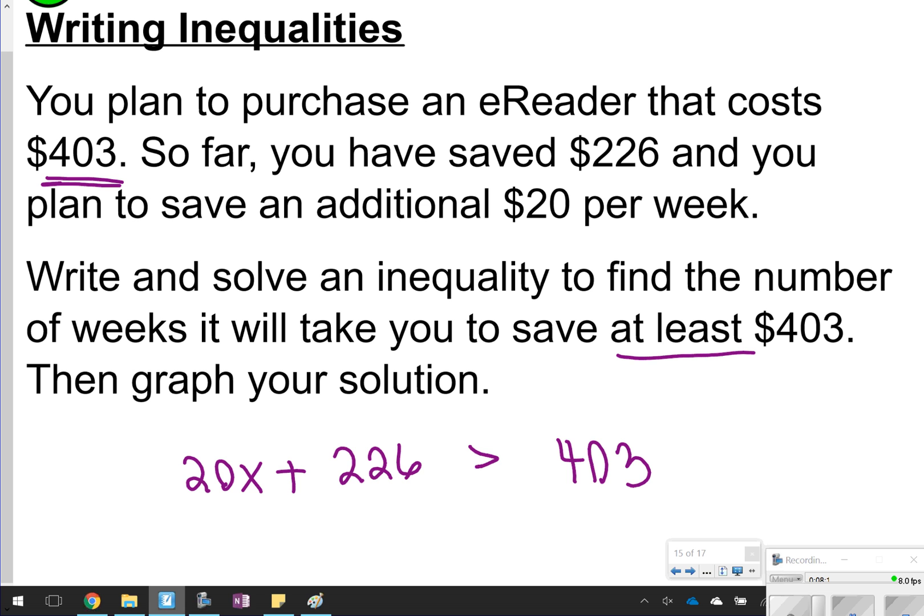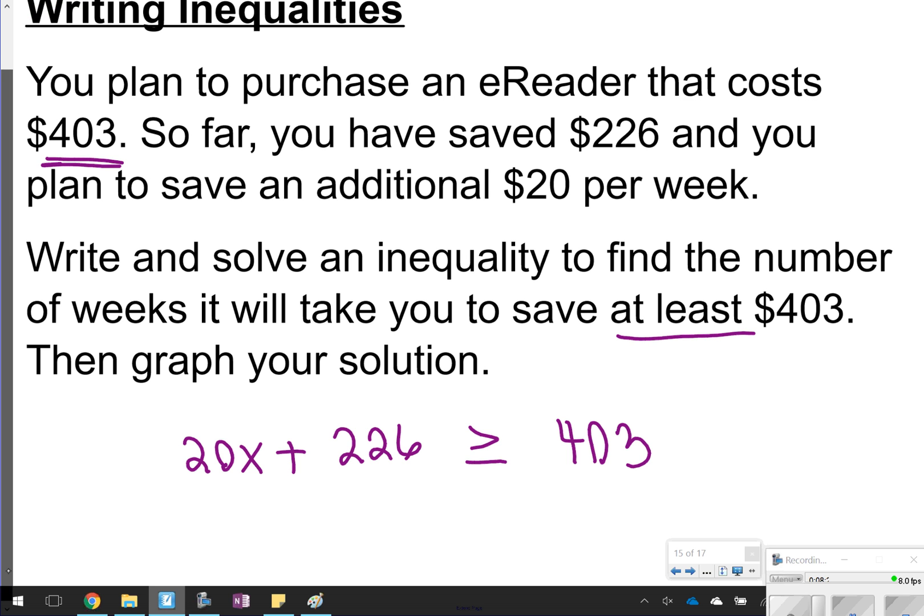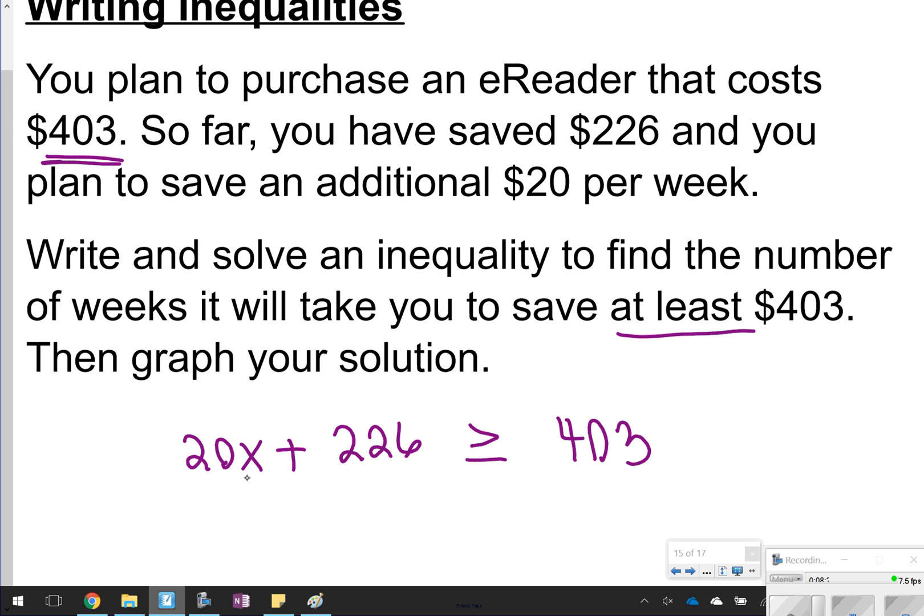So remember, at least would be greater than or equal to. So what I have here is I'm trying to save up to $403. So I wrote 20x, that means $20 per week, 20 times x, plus the 226 that I've already saved, should be greater than or equal to $403. To solve, I'm going to undo addition and subtraction first. So minus 226 from both sides. 403 minus 226 is going to give me 177.